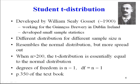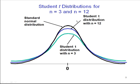The student t-distribution was developed by William Gossett in the 1900s. He worked at Guinness Brewing Company, and they had big batches of beer and didn't want to waste all of it, so they had pretty small samples. The t-distribution resembles the normal distribution, but it's a little more spread out. We have degrees of freedom, which is n minus 1. Here's a couple of student t distributions — the standard normal is in black. With degrees of freedom 2 (sample size 3) we get the green one, pretty spread out. With degrees of freedom 11 we get the blue one, a little less spread out, but still more than the normal curve. Eventually it converges to the normal curve.